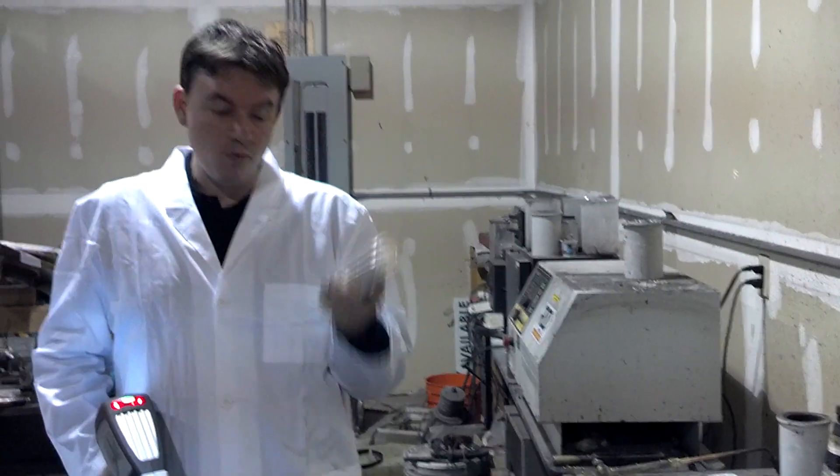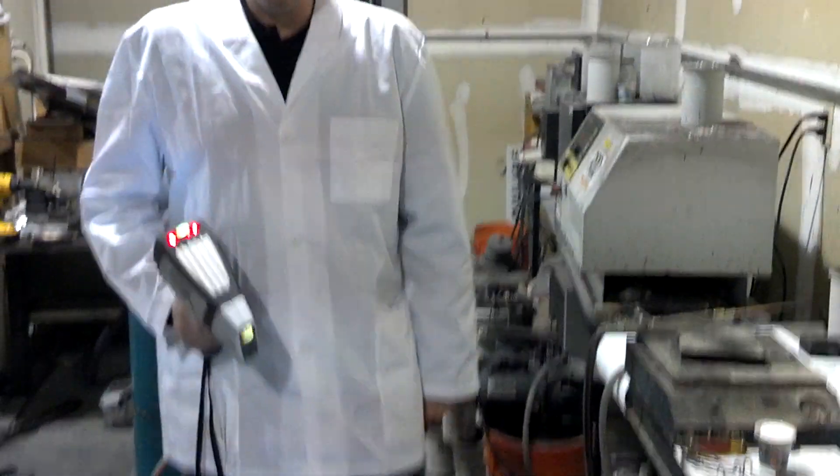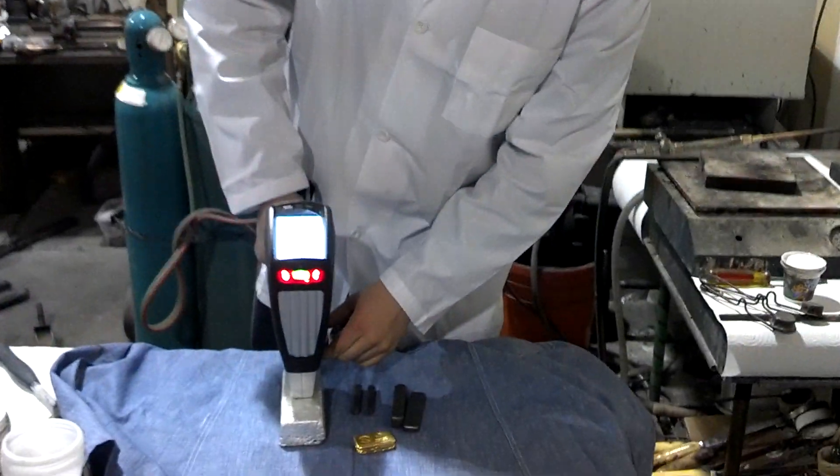Now we have a hundred ounce silver bar that's been poured. We went ahead and cleaned off any flux and junk that was on there. The next thing to do is assay it and make sure that it is actually pure silver.